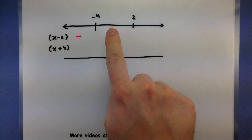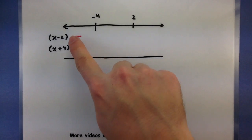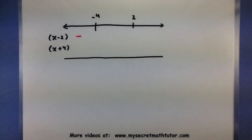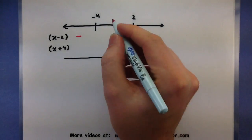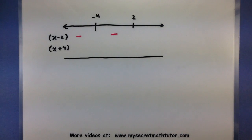Now I'm going to choose a point between negative 4 and 2. Zero seems like a good choice. Let's take that and put it into this factor. So 0 minus 2 would be minus 2, and that is negative. Alright, moving on to this last interval, everything greater than 2.